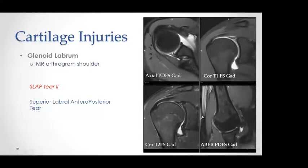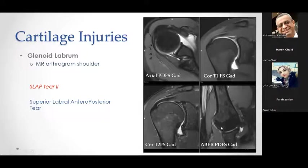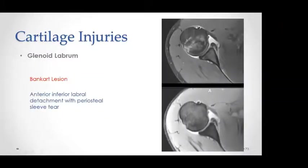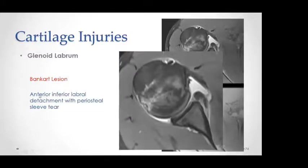Here is a patient with MRI arthrography of the shoulder joint showing a type 2 SLAP tear — a superior labral anteroposterior tear. Here is the ABER position showing abduction external rotation of the shoulder joint. Another example of labral pathology is a Bankart lesion, which is antero-inferior labral detachment with periosteal sleeve avulsion. The definition is important because it distinguishes Bankart from other types of labral tears.